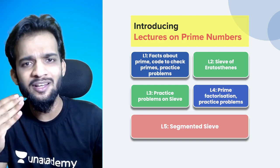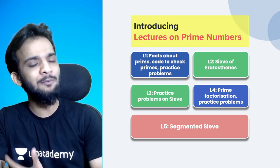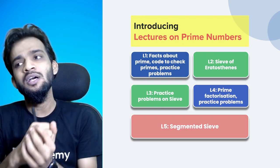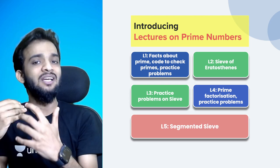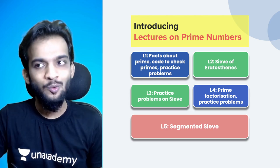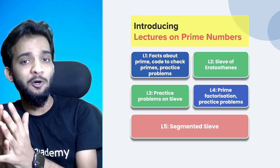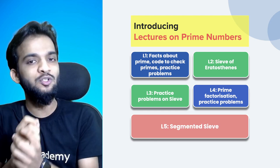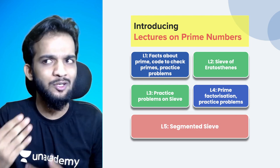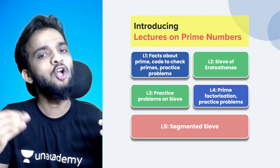In the first lecture, we did a fact check about all the primes. We then wrote a code for checking primes — first we wrote an O(n) code, then we optimized it to O(sqrt(n)). We learned about how to find factors, then did a sum of factors and a practice problem from Codeforces.